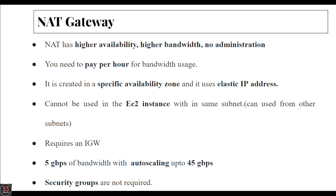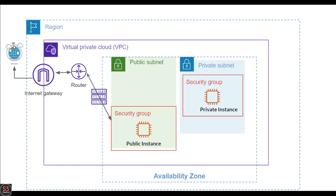Now let's see the working of our NAT gateway. Here is the region, and in the region we have created our VPC. In the VPC we have two different subnets — one is the public subnet and one is the private subnet. The public instance in the public subnet is connected to the internet gateway through the router, and we edit the route table so the public instance can connect to the internet.